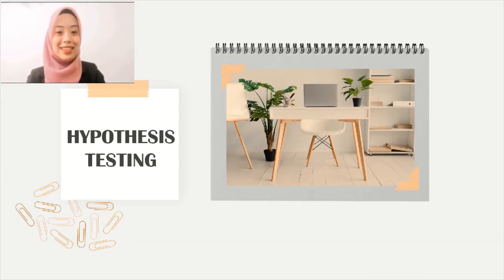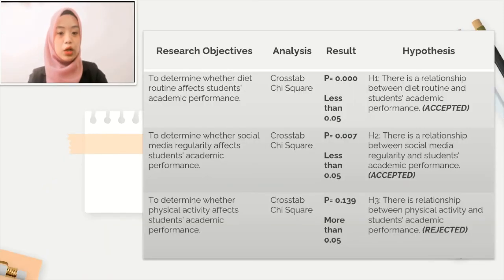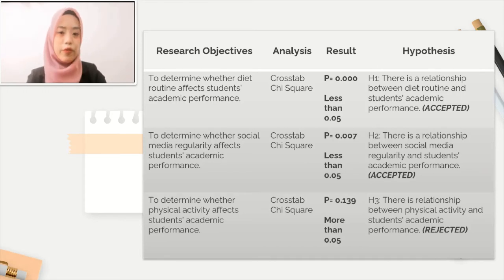Let's go to the hypothesis testing to show the correlation between the dependent variables and independent variable. According to the results, the first and second dependent variables show a relationship with the independent variable, where the value of P is less than 0.05. Therefore, the hypotheses for both of these dependent variables were accepted. However, for the third dependent variable, physical activity, the result shows a P-value of 0.139, which is more than 0.05. Therefore, the hypothesis was rejected.